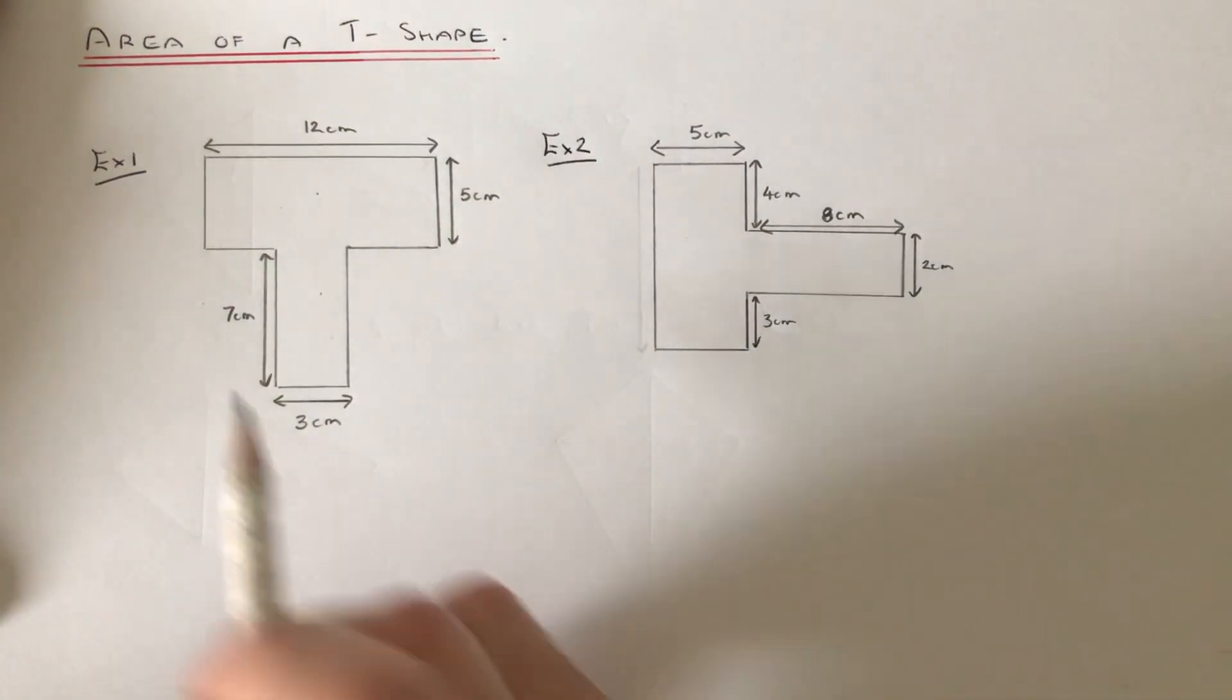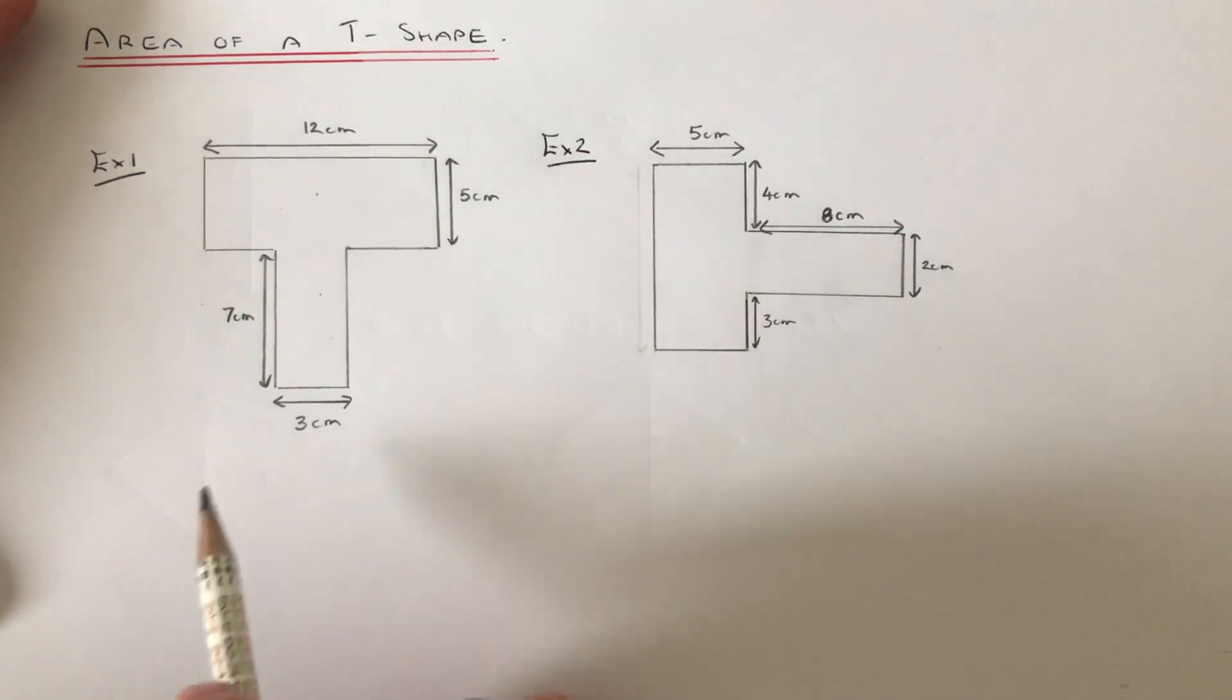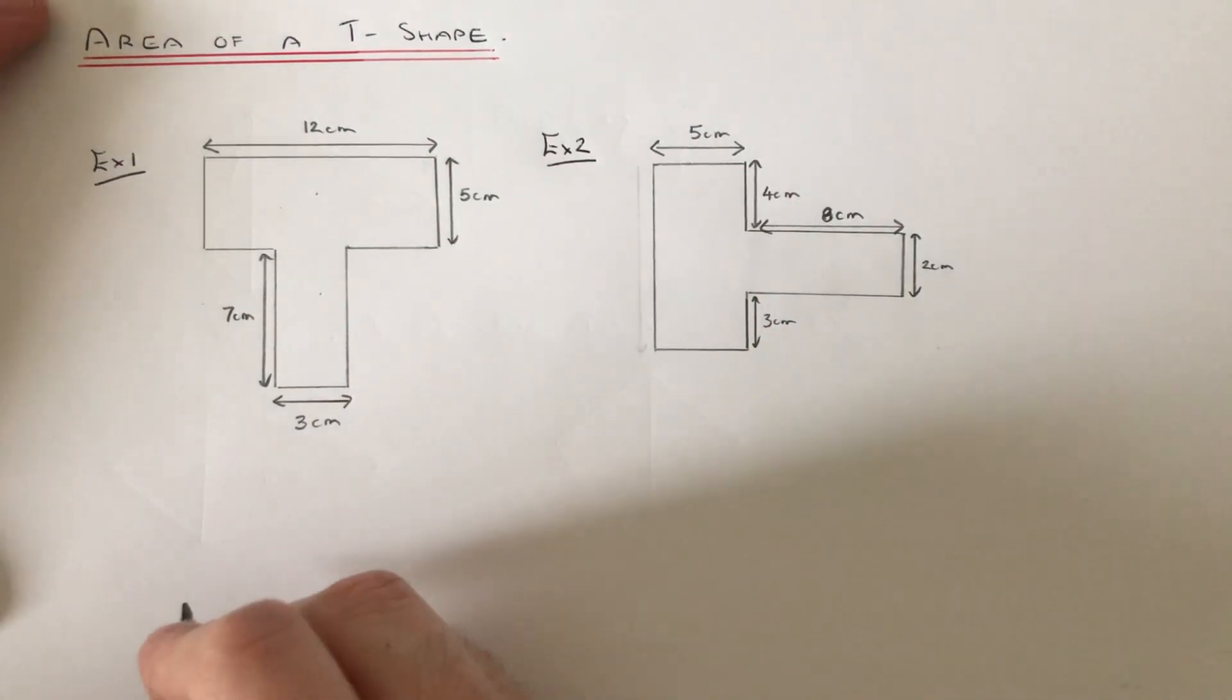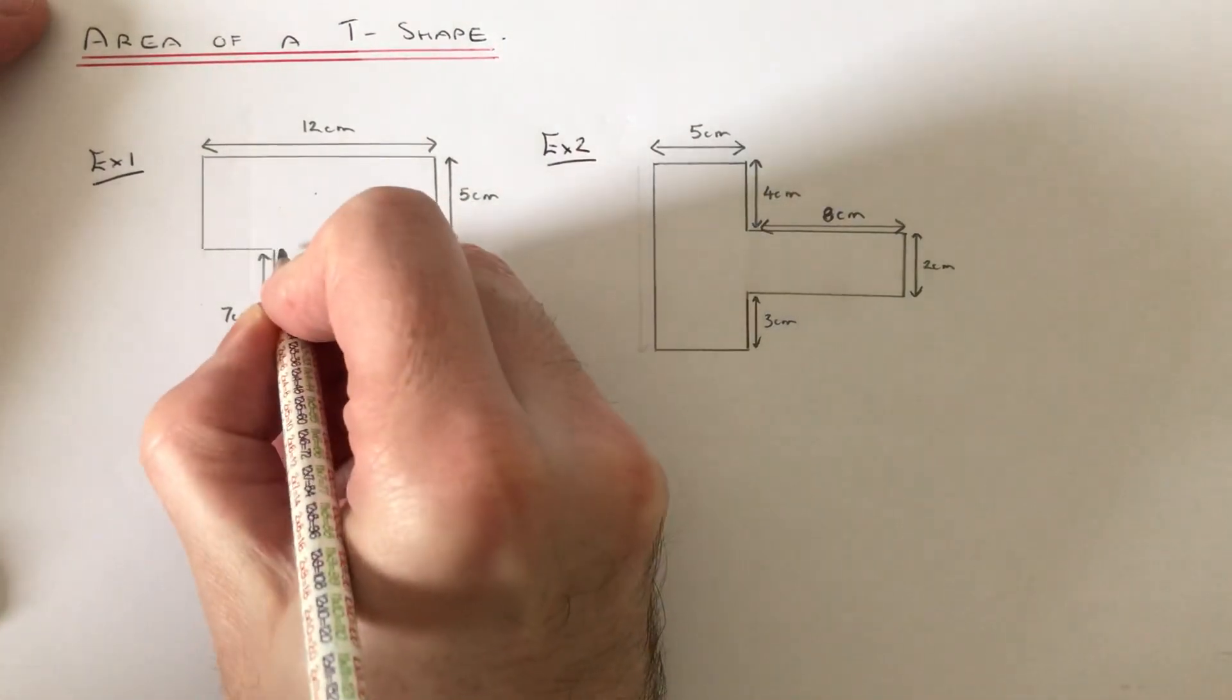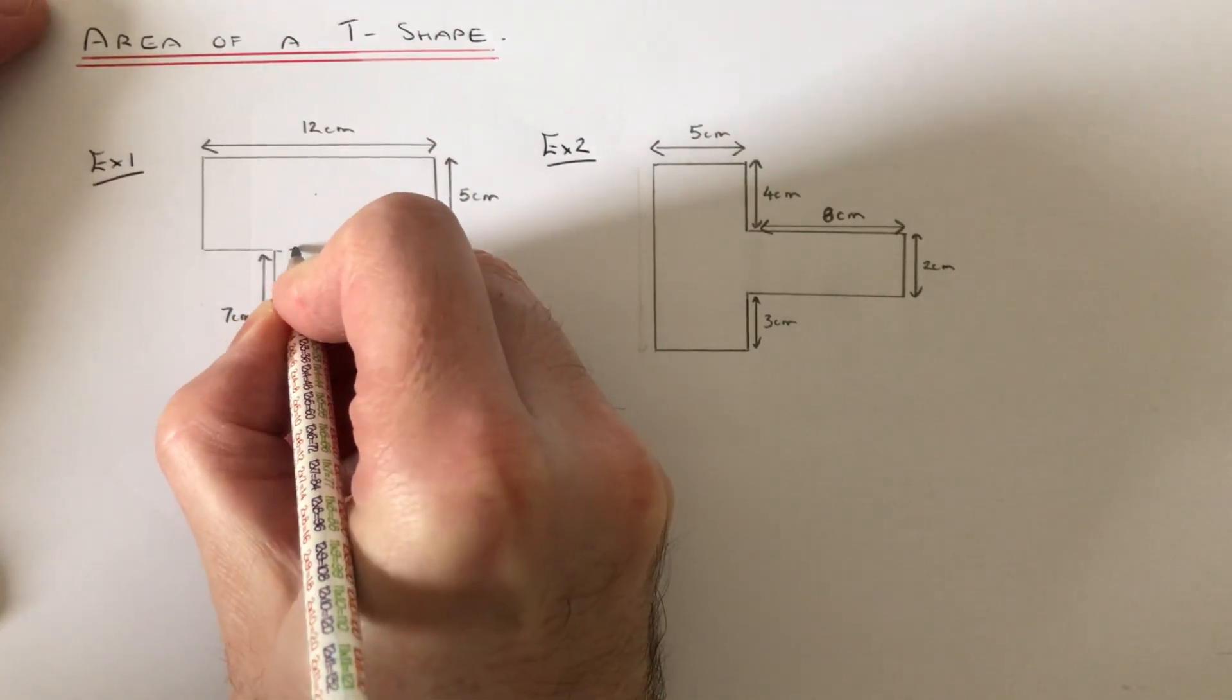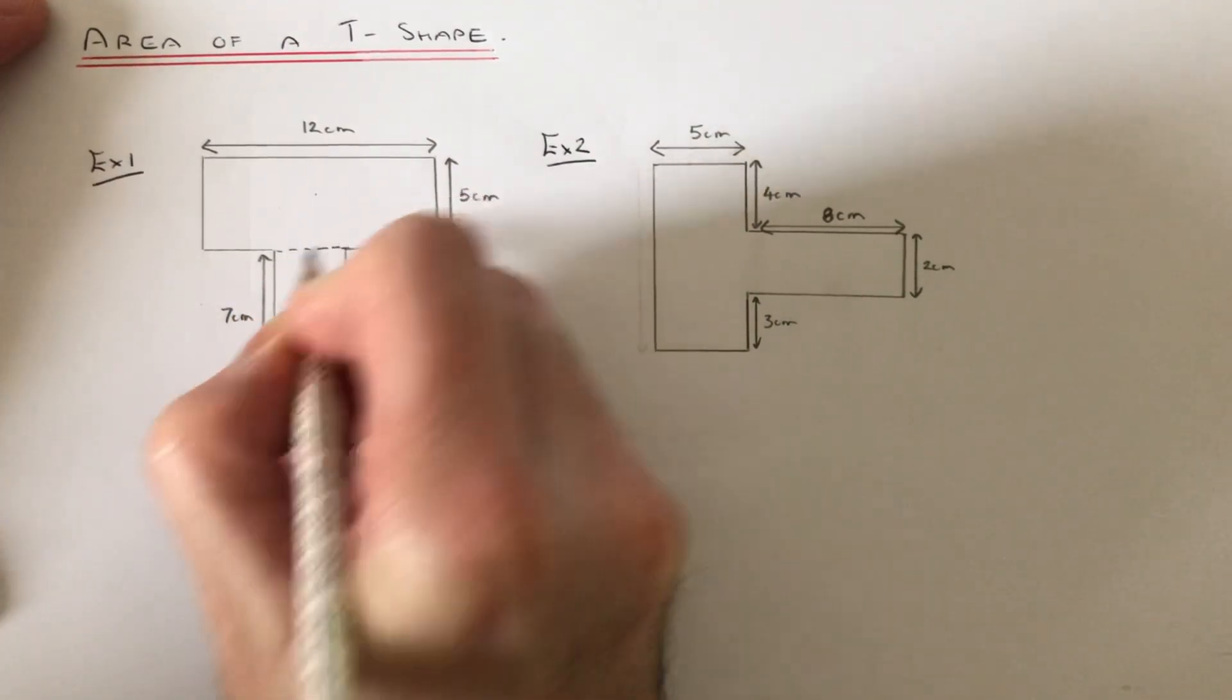So let's have a look at example 1 then. The first thing we need to do is divide our T-shape into two rectangles. So I'm just going to put a horizontal line in here.